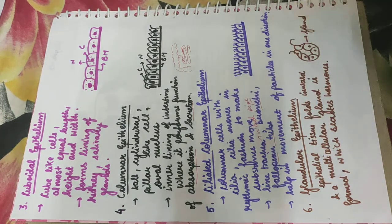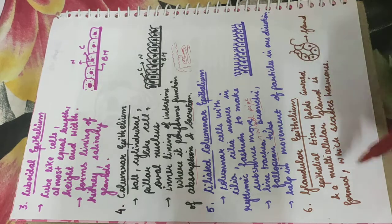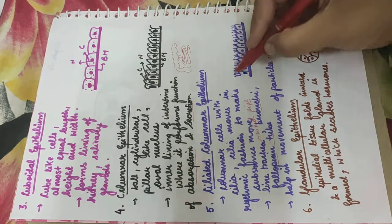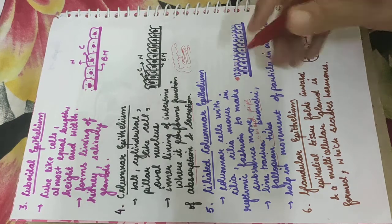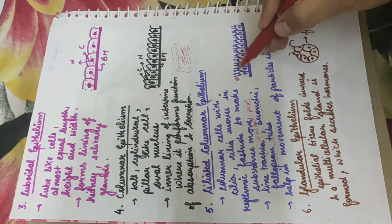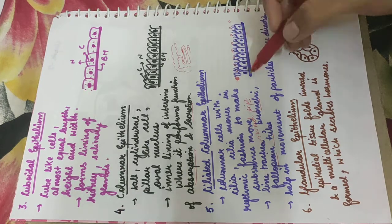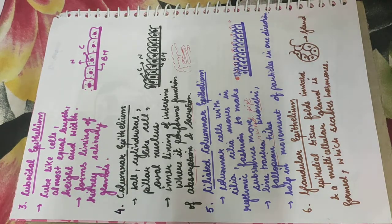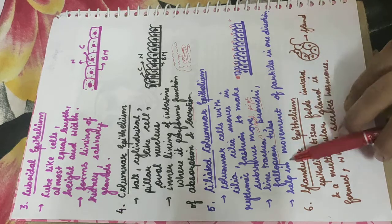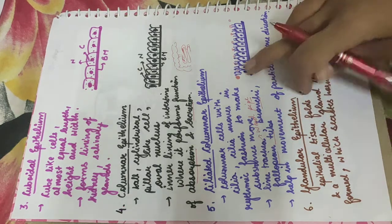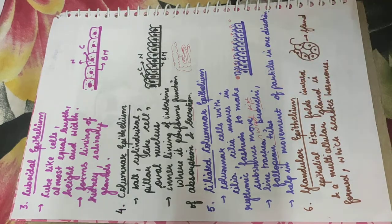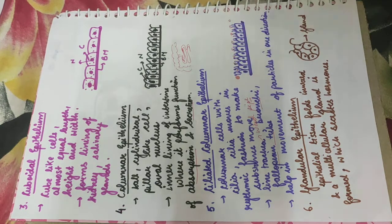Ciliated columnar epithelial cells specifically help in the movement of particles in one direction. For example, if there is a substance present here, it will help this substance to move rhythmically in one direction. That is why this is called rhythmic movement, and they do this with the help of cilia.